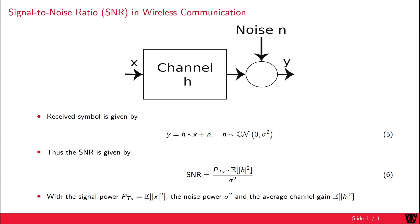We call the expected value of the squared absolute channel the average channel gain, since it is the average scaling of the signal power incurred by the channel. This brings me to the end of this video and the performance indicator called signal-to-noise ratio. Thank you for watching.